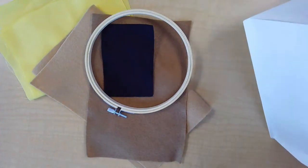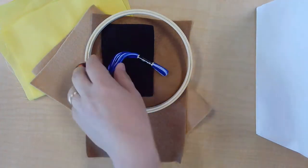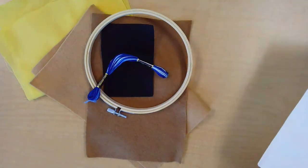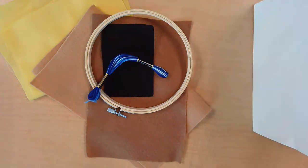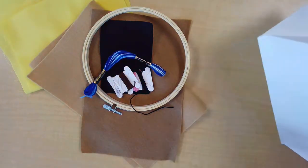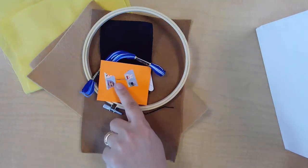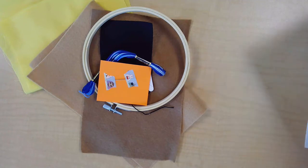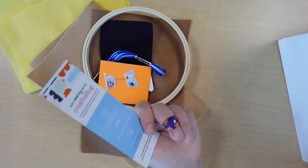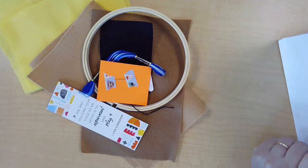Your embroidery hoop, a skein of embroidery floss, which is what we call the thread you use to embroider, a couple of holders that have some colors of floss for your final project, your embroidery needle taped to some cardstock, and a bookmark from Creative Bug, which is a free resource from the library.